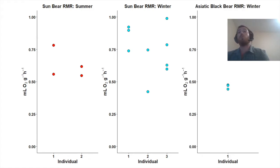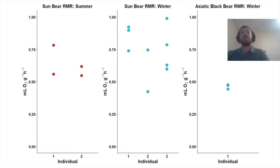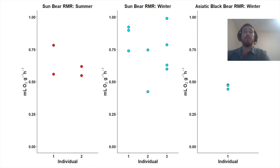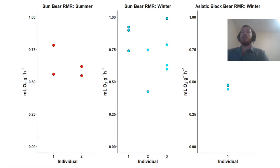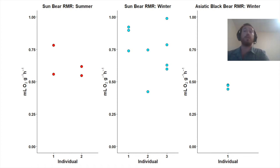We have also been able to measure one Asiatic black bear so far, with three measurements on this one individual taken in the winter. One of the first things I noticed is that there appears to be a lot less variation as opposed to the sun bears. This might be due to differences in levels of activity during measurement between these two species. The Asiatic black bear would immediately sit down and barely move for the entirety of the measurement, whereas the sun bears would be fairly active at the beginning and then calm down towards the end, which might be slightly inflating their resting metabolic rate.